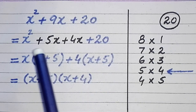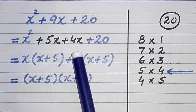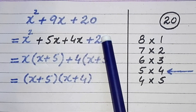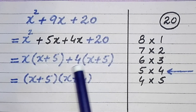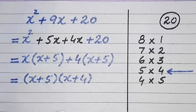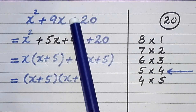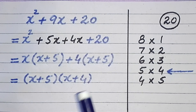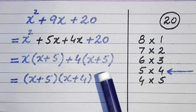First we take common from the first two terms, and then we take common from the last two terms. At the end this bracket is taken out as common. So these are the required factors of the given quadratic expression. In this video we have discussed a special technique to break the middle term of a quadratic expression.